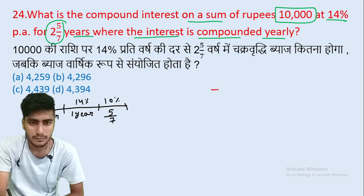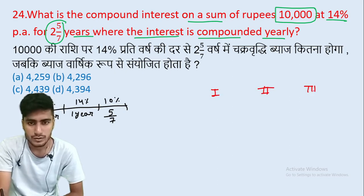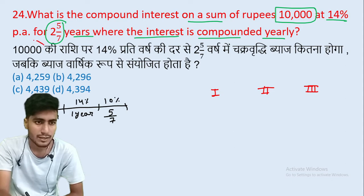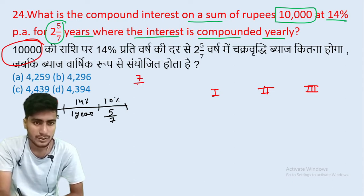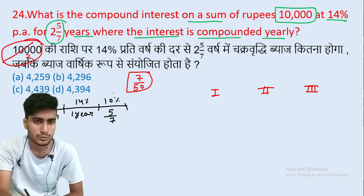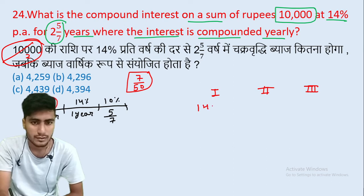The calculation runs over 3 periods: 1st year, 2nd year, and then 5/7 year. The principal for the first year is 10,000.